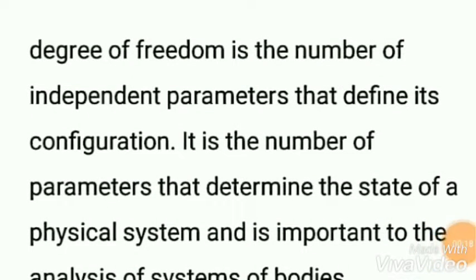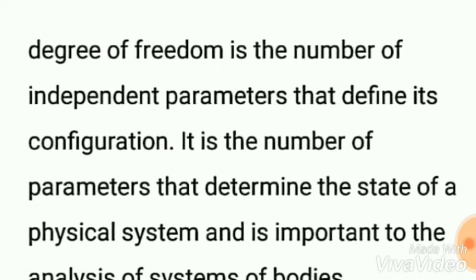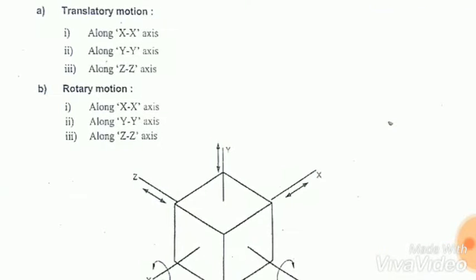As we know, the degree of freedom is nothing but the independent parameter that defines the configuration of the body, and it is the number of parameters that determine the state of a body or physical system. So to better understand, let's have a look at the figure.